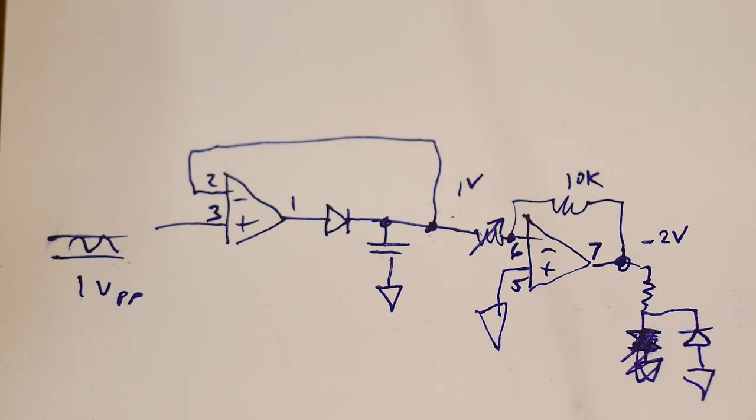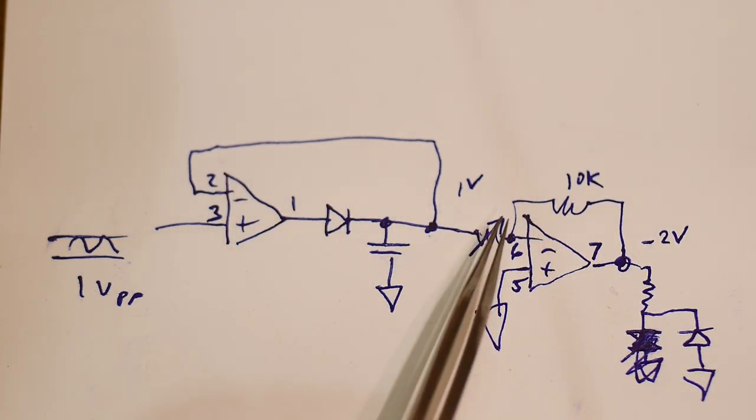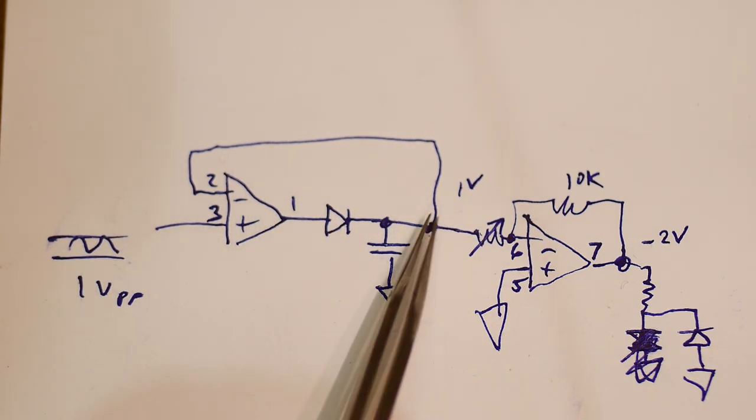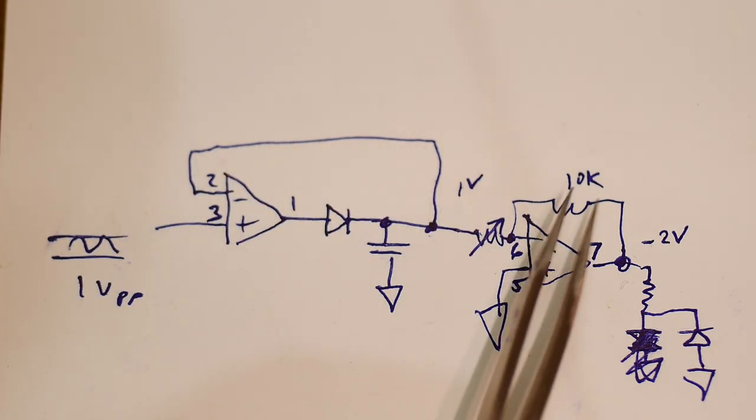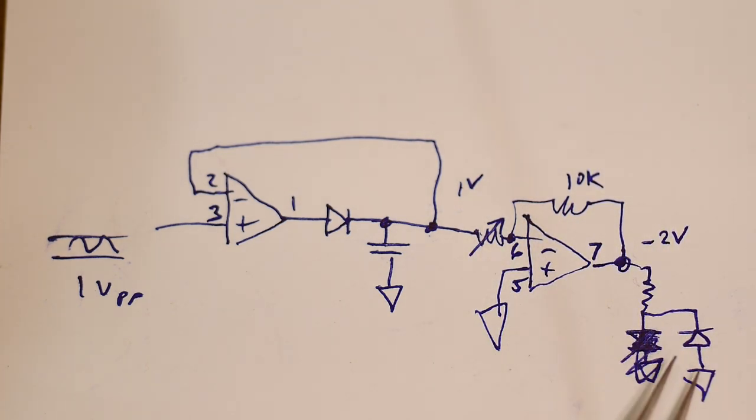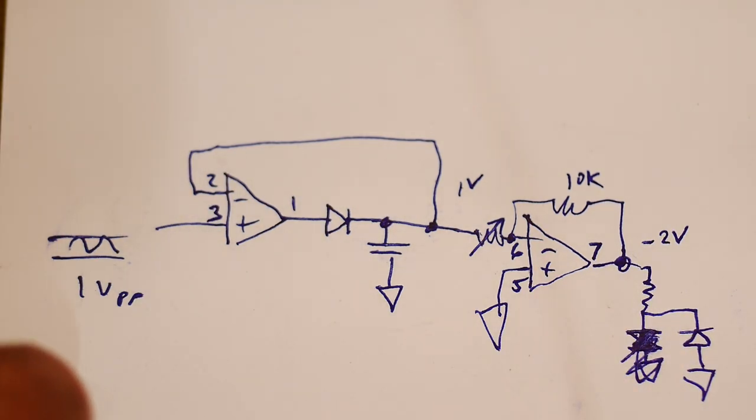Alright, I thought I'd look at compression circuits or automatic leveling circuits. I've got a peak detector that runs into an amplifier with an adjustment. If I put in one volt peak to peak, I should get one volt DC here. If I run it through and put some gain on it, I can get minus two volts. Then I have an LED in here, so that should turn on the LED, figuring the forward voltage is about two volts.